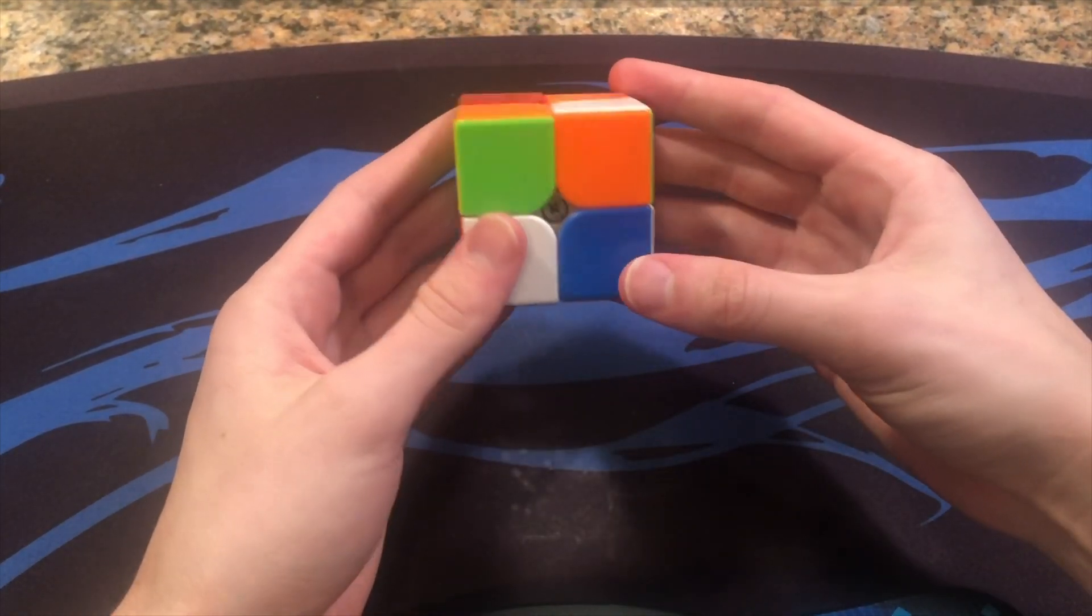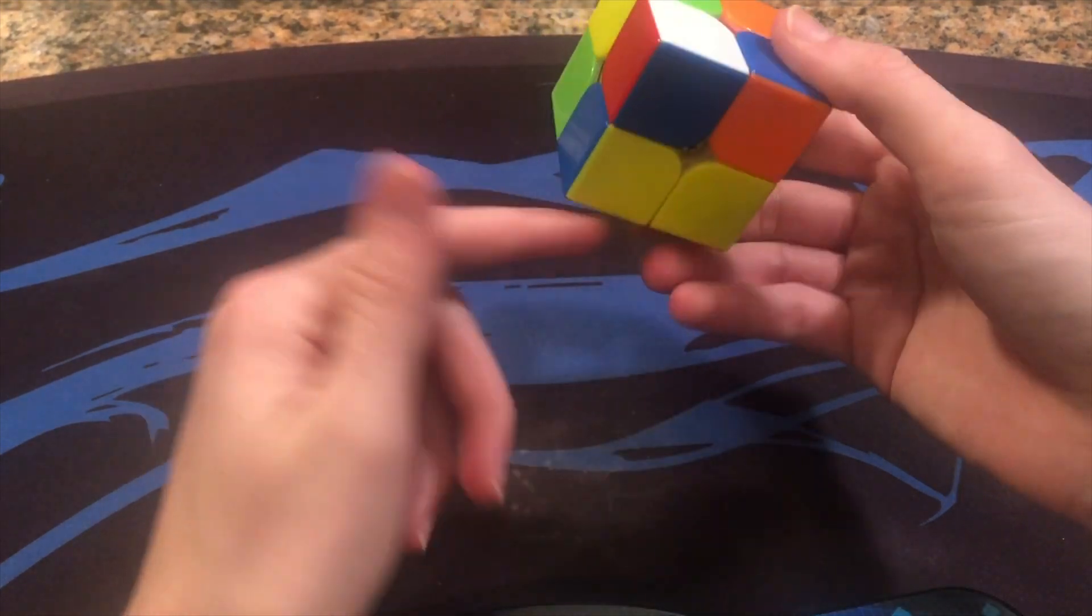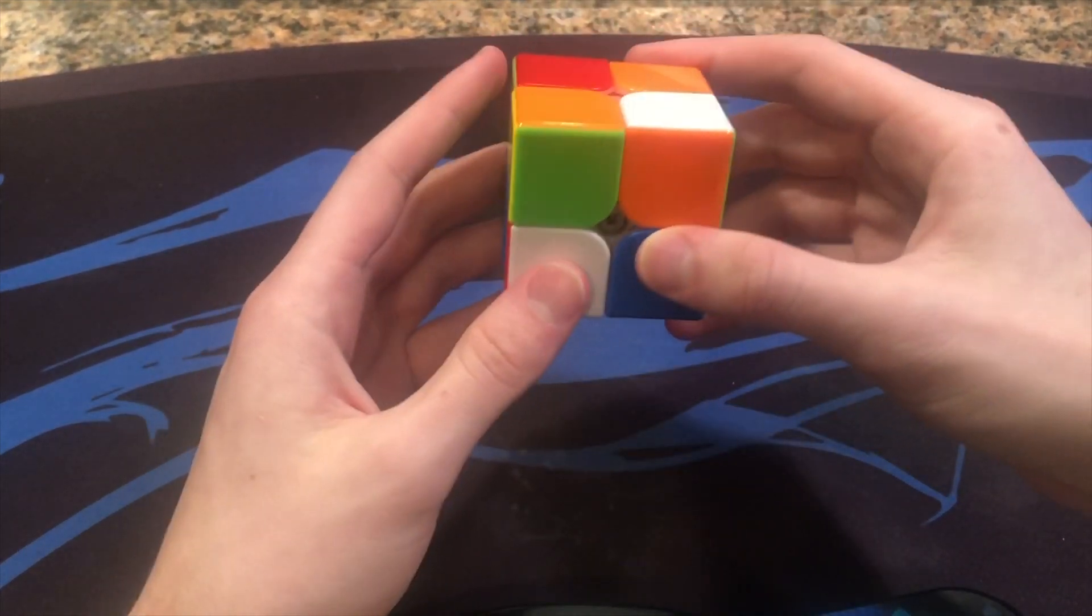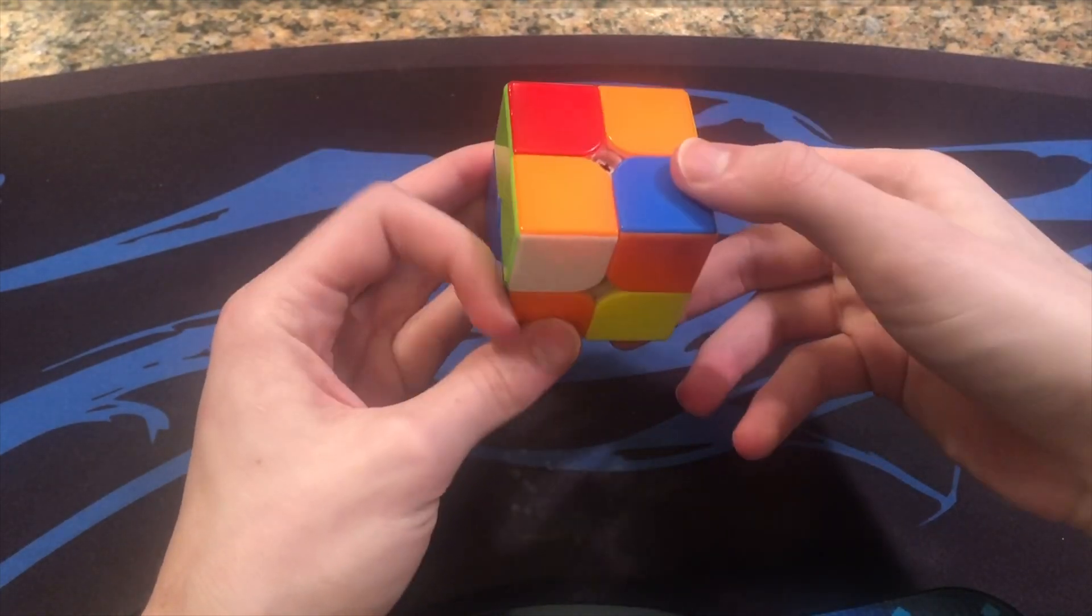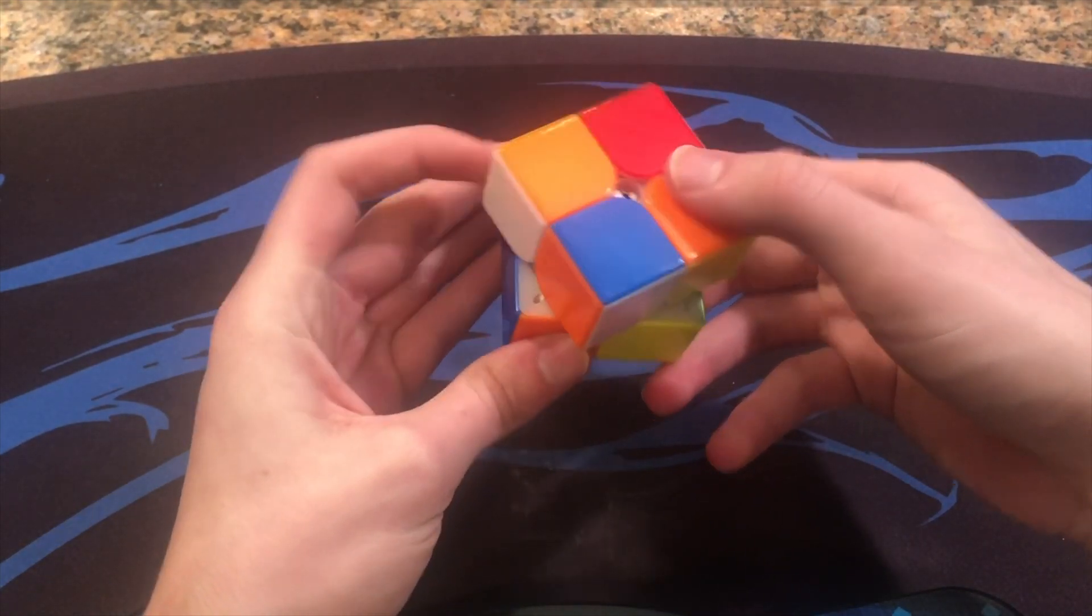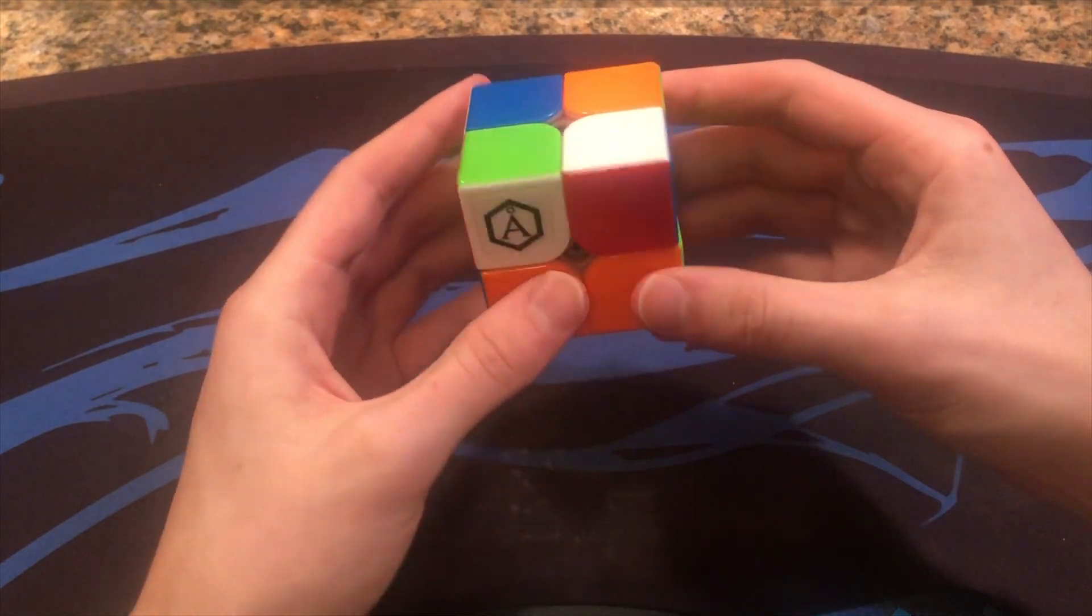So the way I did it here was holding yellow on bottom and red and back like that, and then doing R' F2 and then R U R2 and then U R' and then I went into the CLL from there.